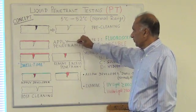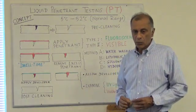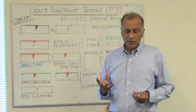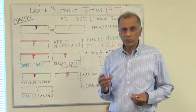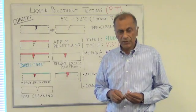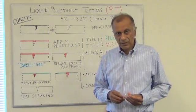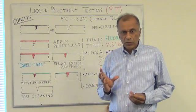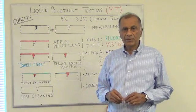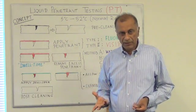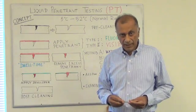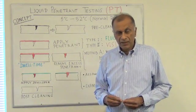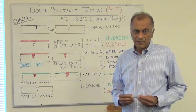After the cleaning we apply the penetrant. Penetrant is a liquid which has the property of capillary action to penetrate into the discontinuities and cracks in the surface. In order to view the penetrant after the inspection, a dye is included in the penetrant. It can be a visible dye with a red color, or it can be a fluorescent dye which would be visible under a black light.